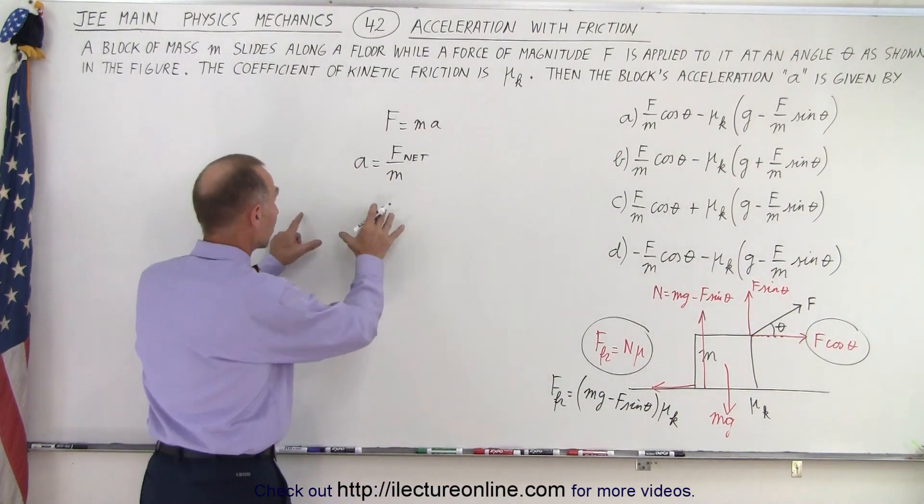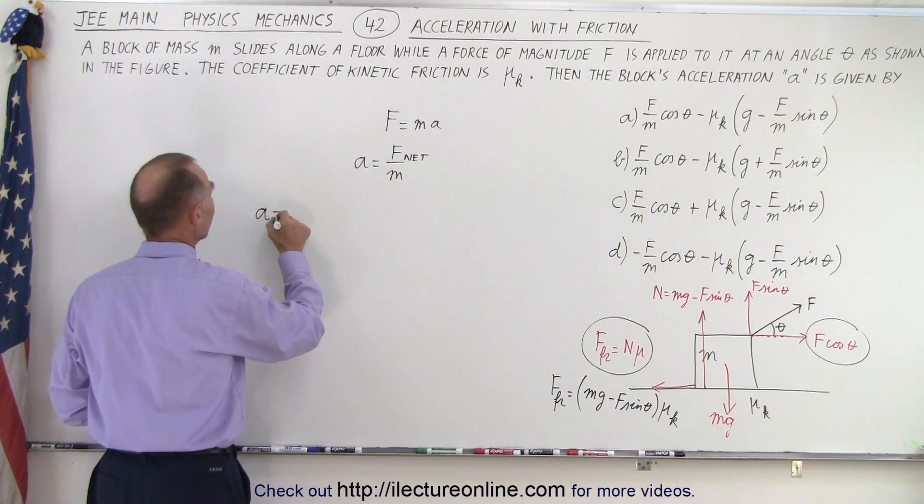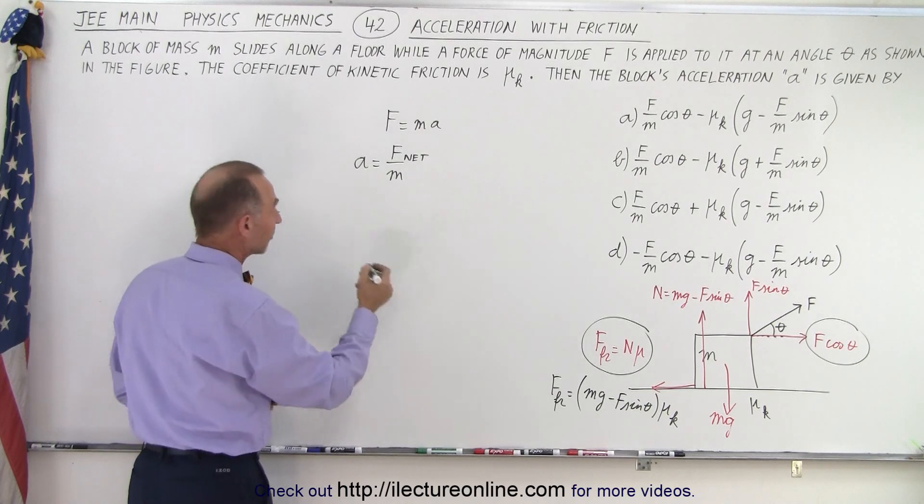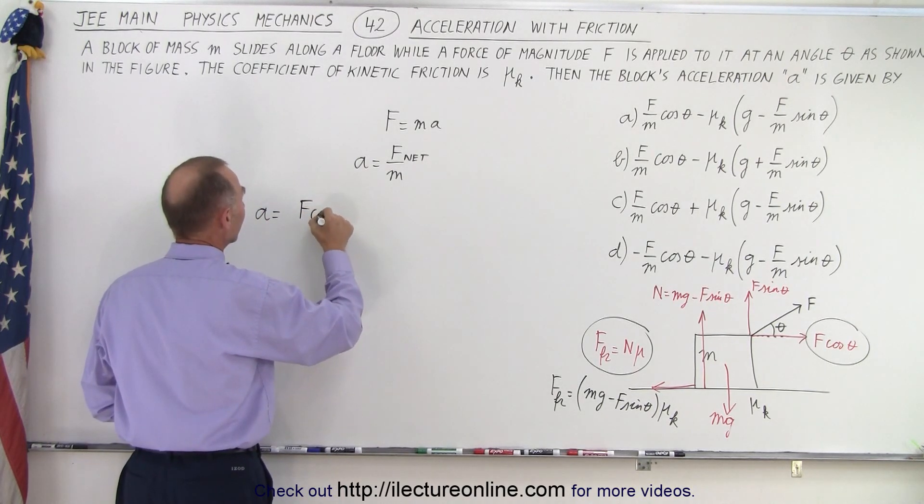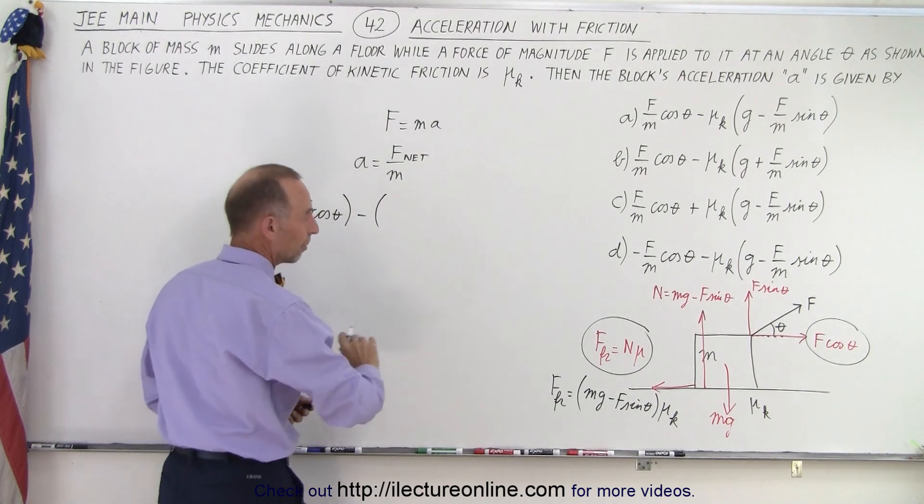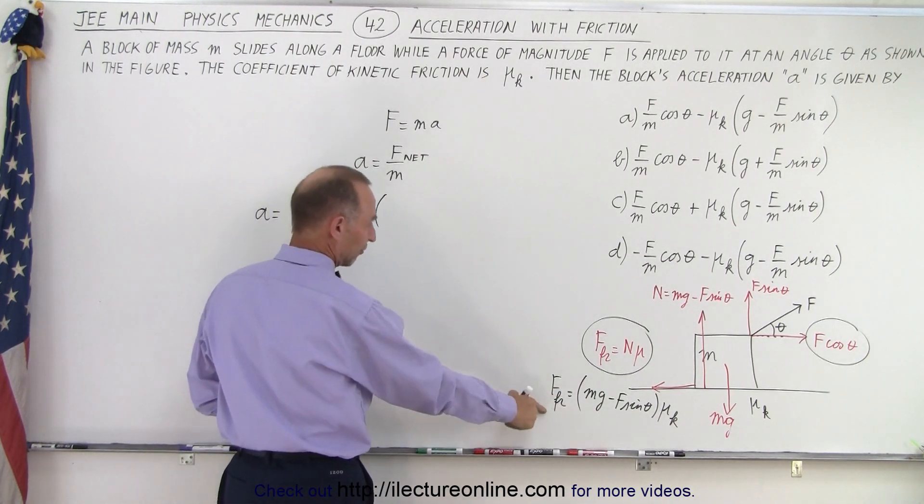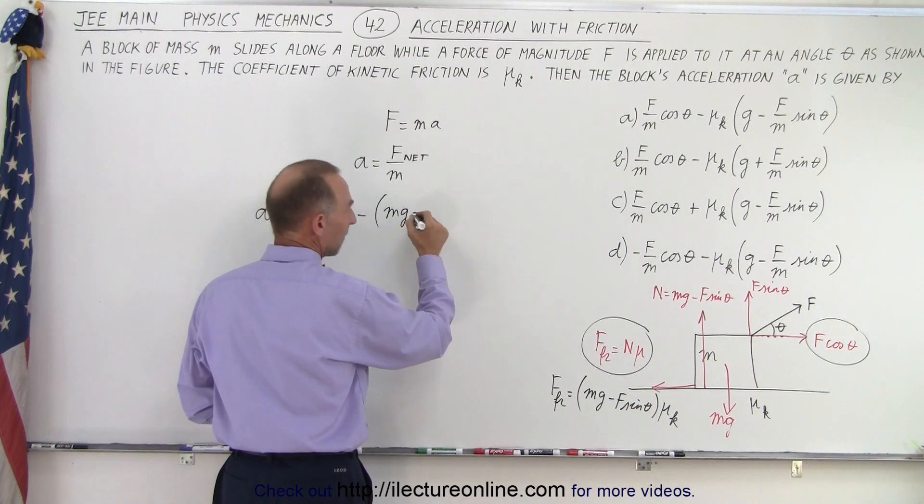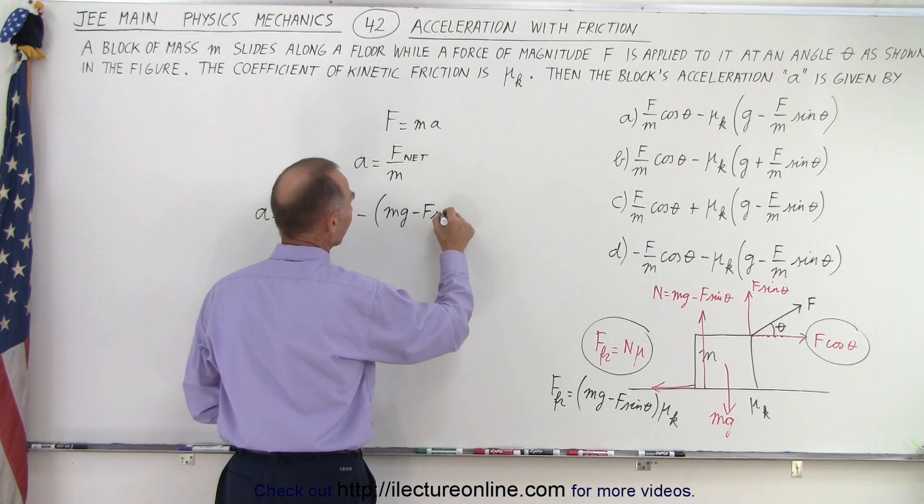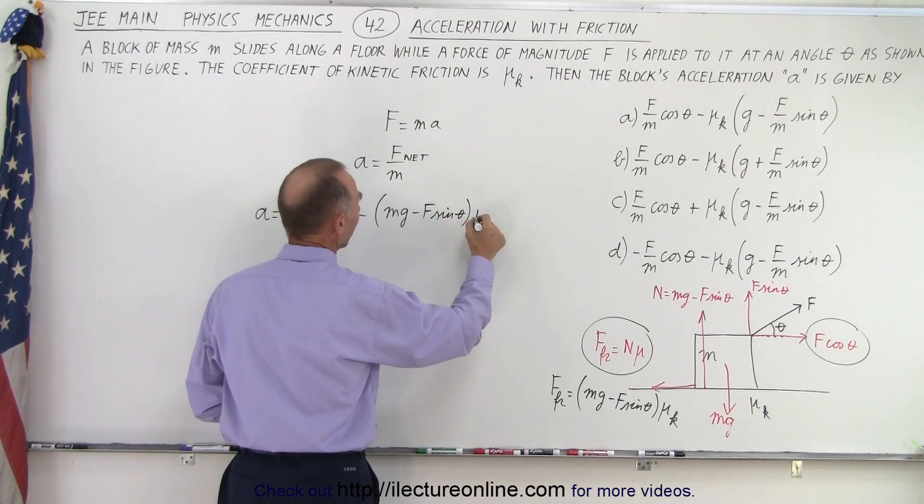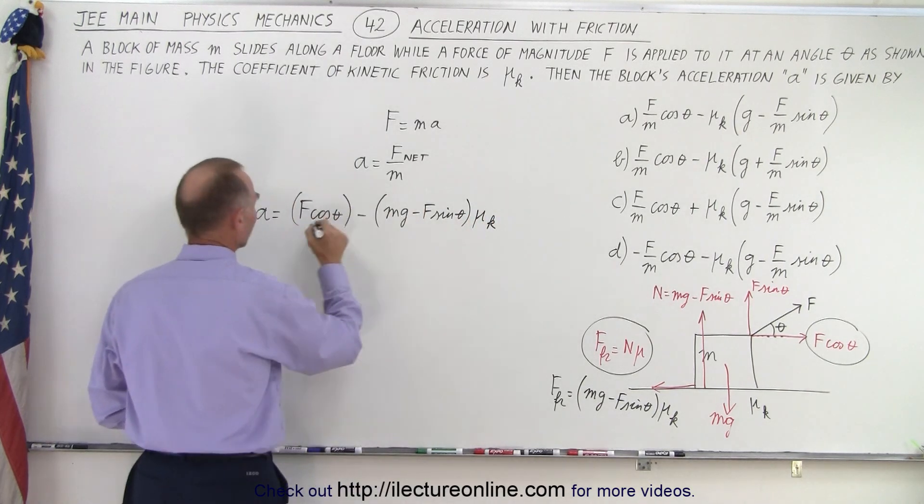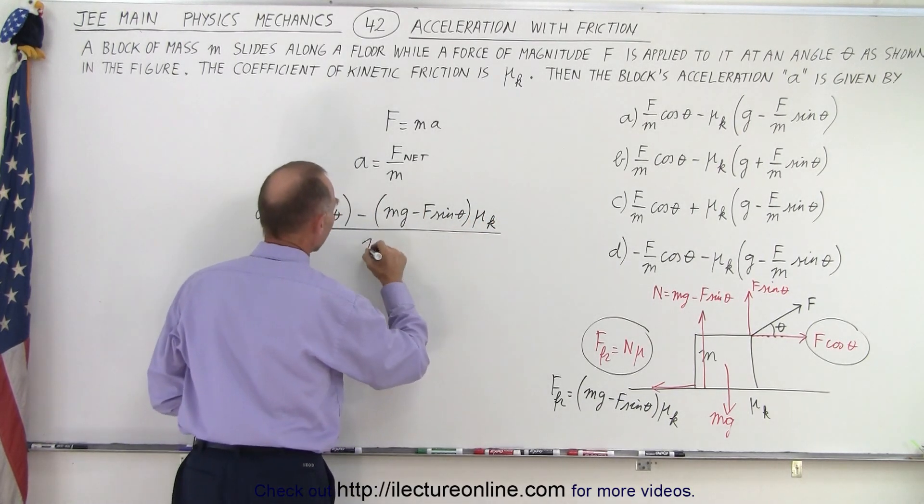So when we write that into our equation here, we can say that the acceleration is equal to all the forces aiding in the acceleration, which is F times the cosine of θ, minus all the forces opposing the acceleration, which is the friction force, which is (mg minus F sin θ) times μ_k. And of course we have to divide all that then by m.